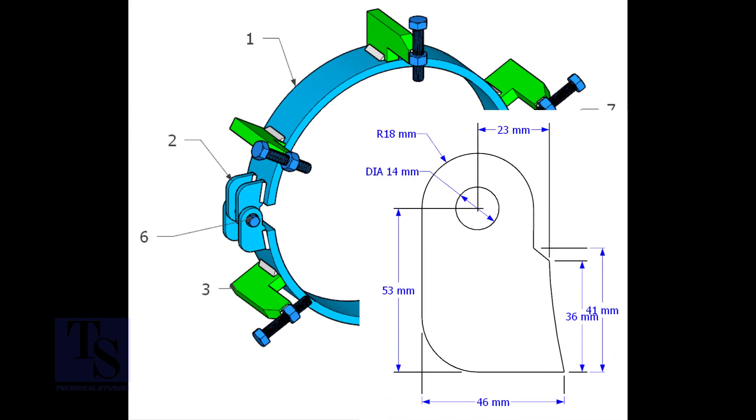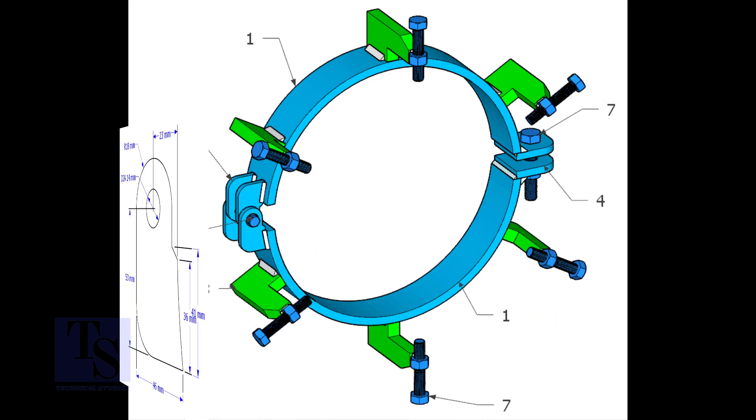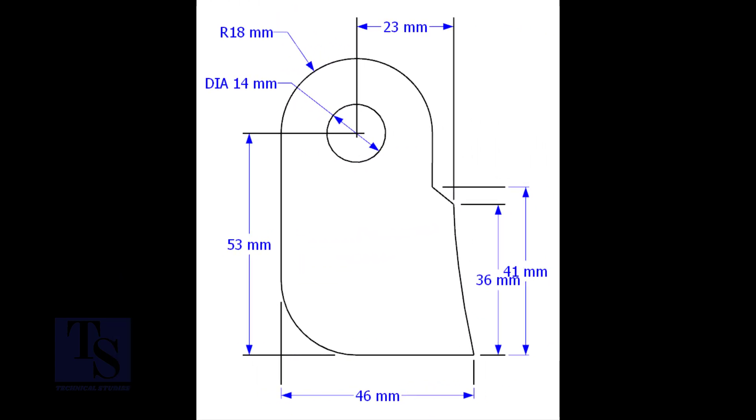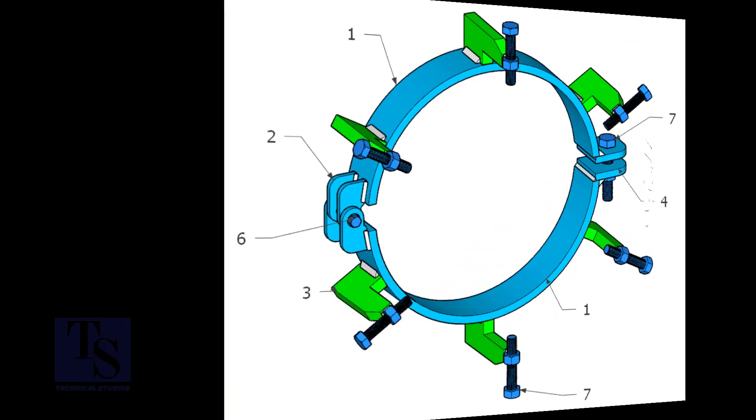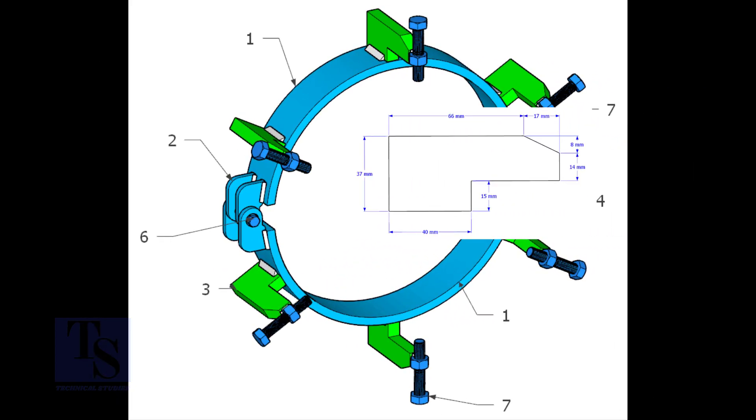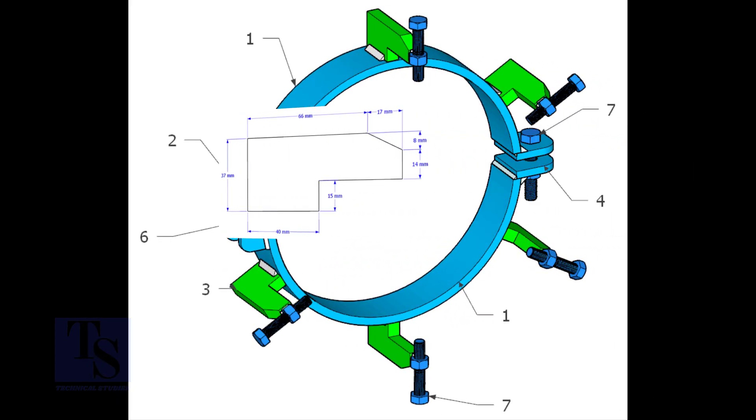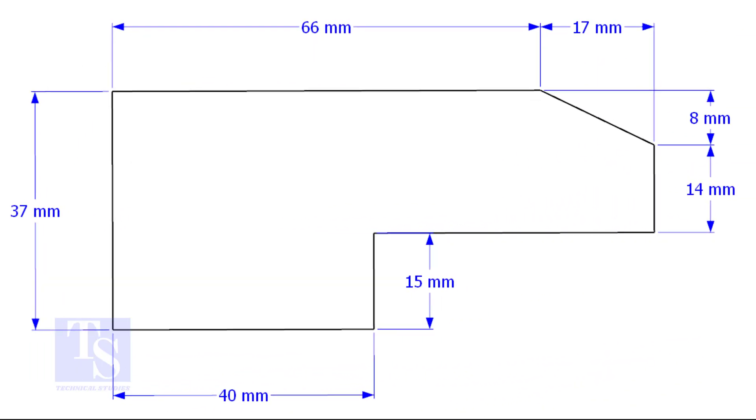Cut item number 2 from 8 or 10mm thick plate. The quantity is 4 numbers. Item number 3, the quantity is 6 numbers, cut it from 14 or 16mm thick plate.